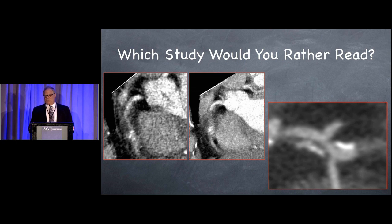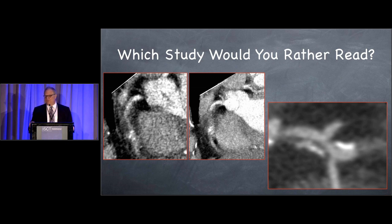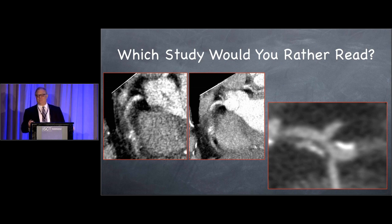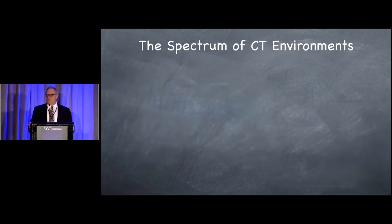I would ask you, which study would you rather read? You've got the CT on the left — there are two images there, it's very noisy, and the right coronary artery is pretty smudgy — versus this highly magnified view of a portion of a left anterior descending coronary artery that has some complex plaque but is very clearly delineated. This is the root of the issue of acquiring the data as best as possible to get those kinds of images.